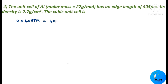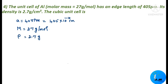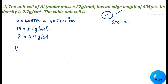The edge length a = 405 pm = 405 × 10⁻¹⁰ cm. Molar mass M = 27 g/mol and density ρ = 2.7 g/cm³. If we find the Z value, we can identify the unit cell type: Z = 1 for simple cubic, Z = 2 for body centered cubic, and Z = 4 for face centered cubic.